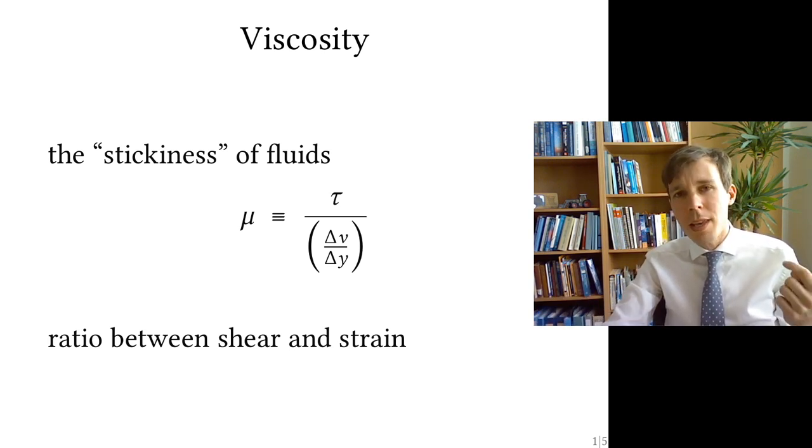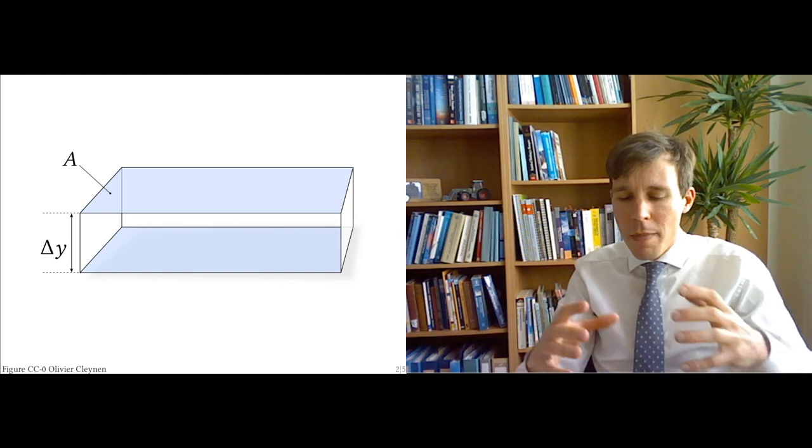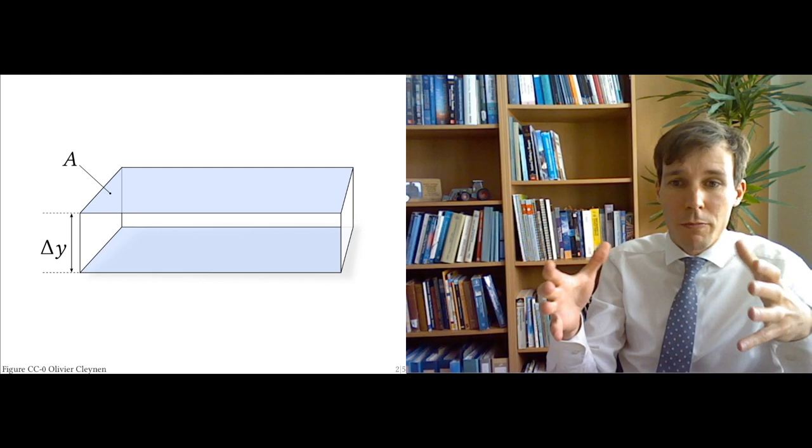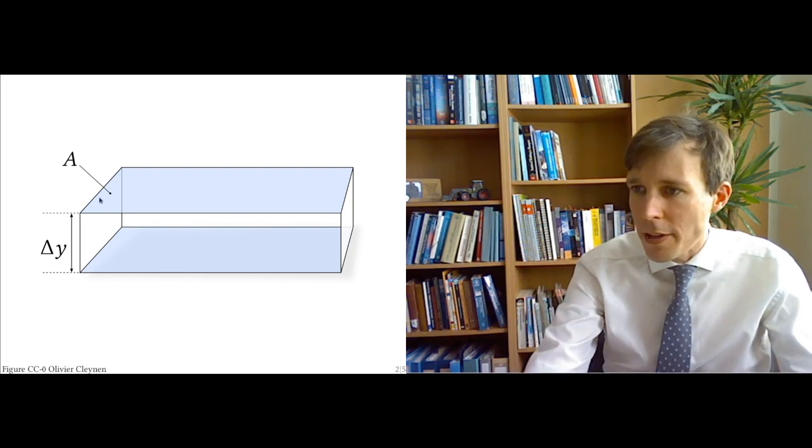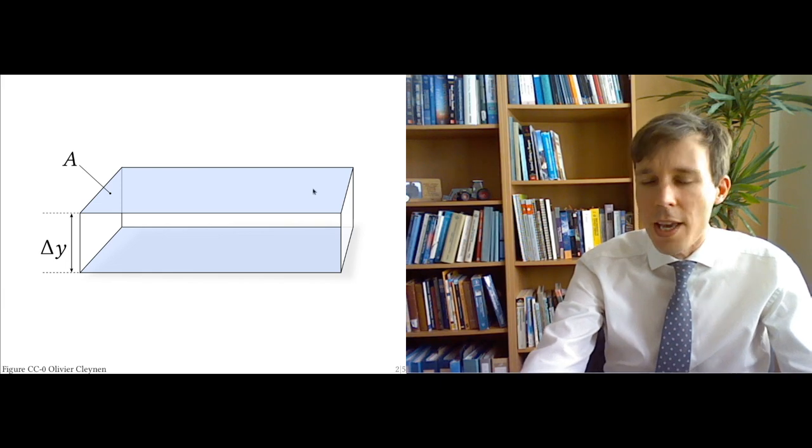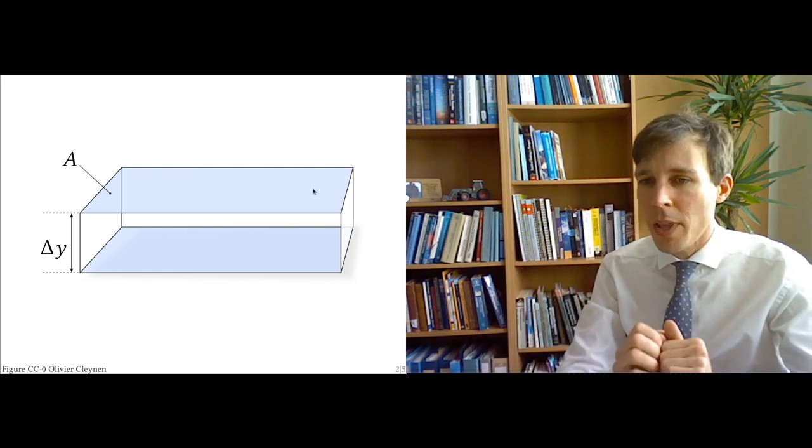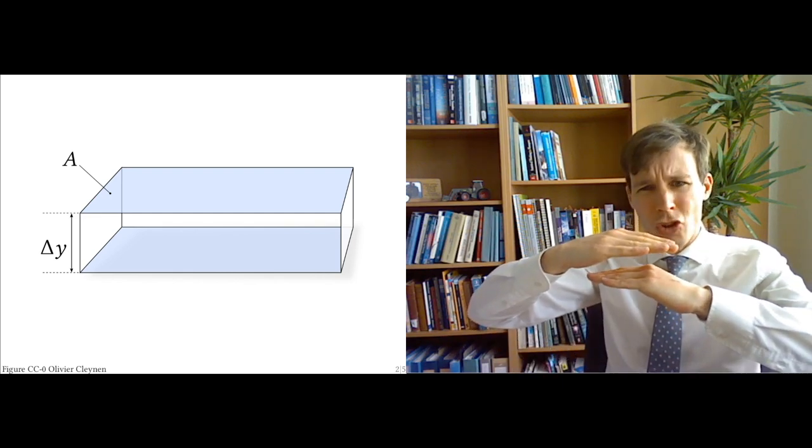For this, we need to make a conceptual experiment. We're going to take a brick of fluid. So imagine inside fluid, you cut out a box, a brick-shaped piece of fluid. And this box has on top an area A, and it has a height, a height delta y.